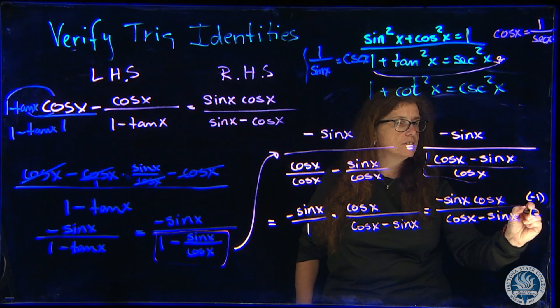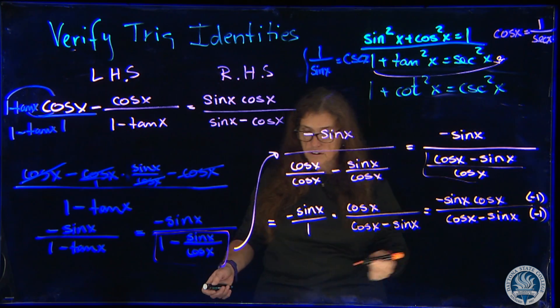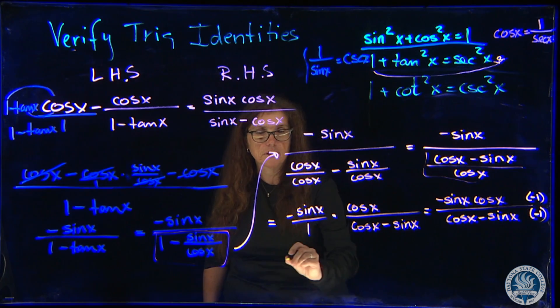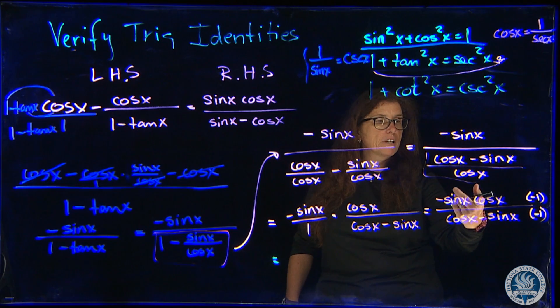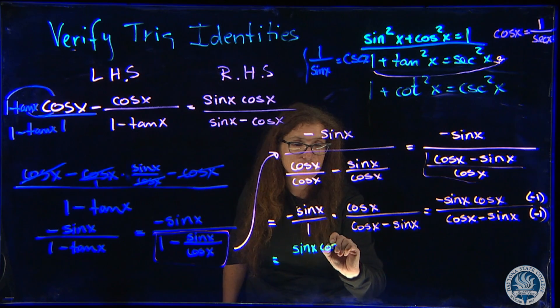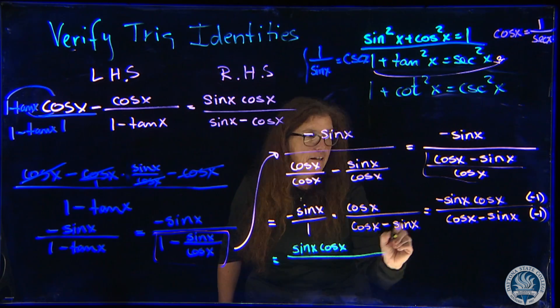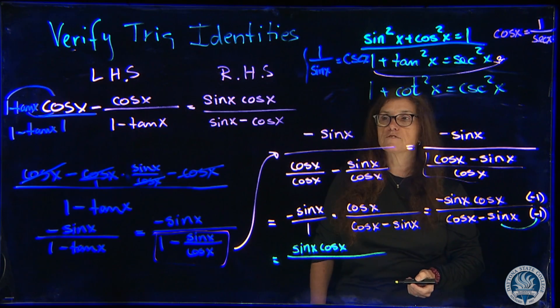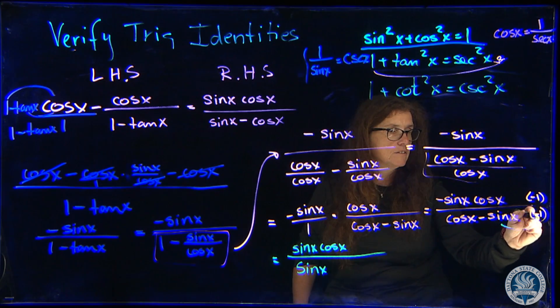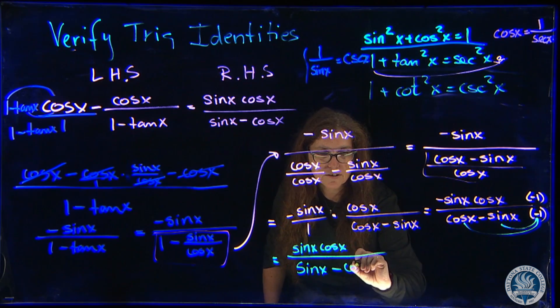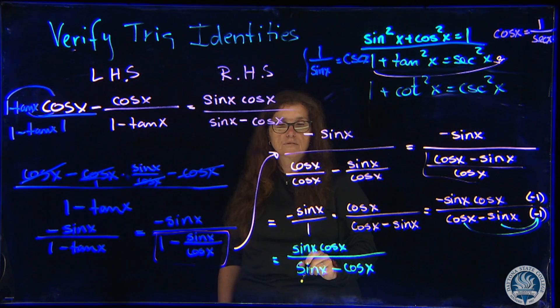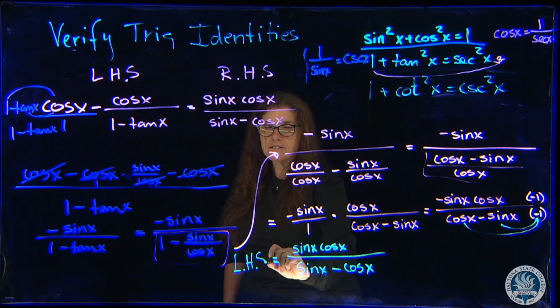If I now multiply by negative 1 the numerator, I have positive sine x cosine x. And if I distribute this negative 1, that gives me a positive sine of x and over the cosine minus cosine of x. Look at that, which is definitely equal to the left-hand side.